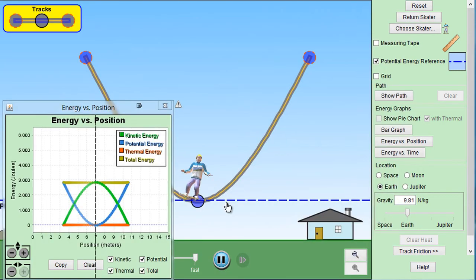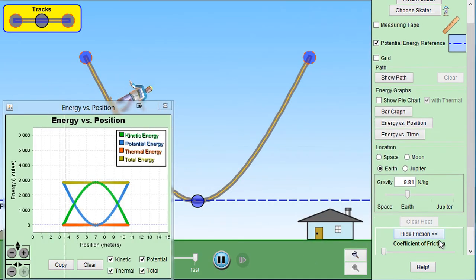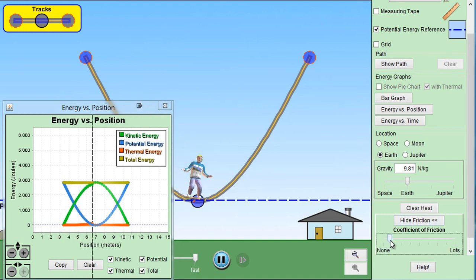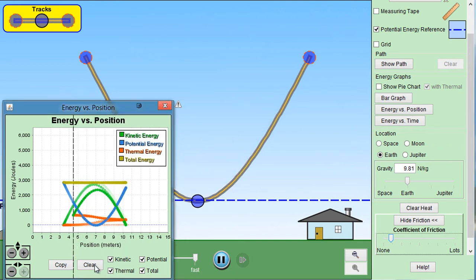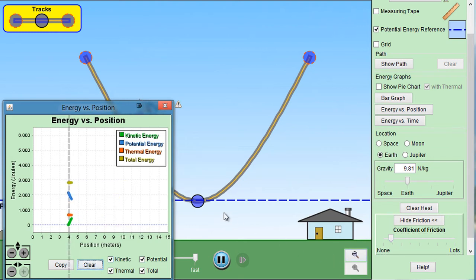All right, now what happens when we add in friction? So we're back with Ken. We're going to add some friction here, just a little bit of friction. And notice what's happening with the graphs over here. Let me clear it so we can start from scratch here.